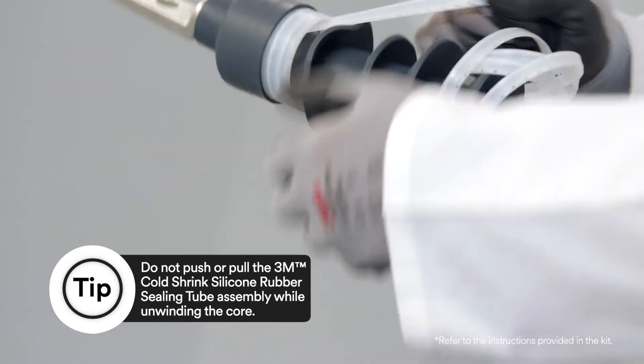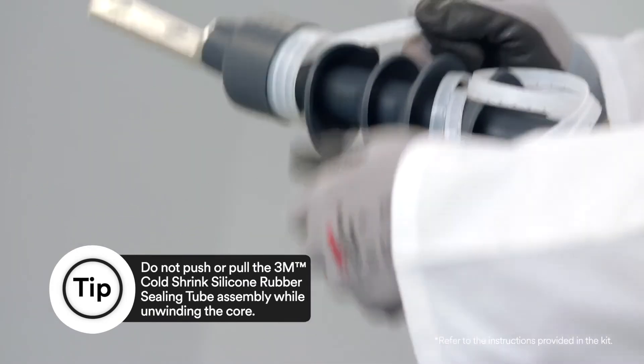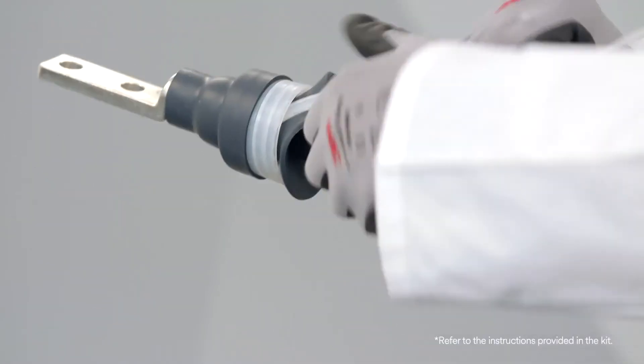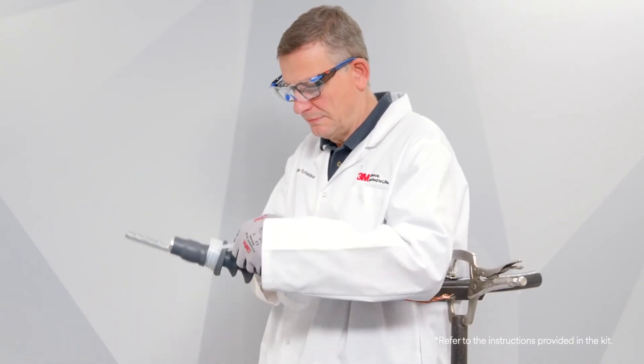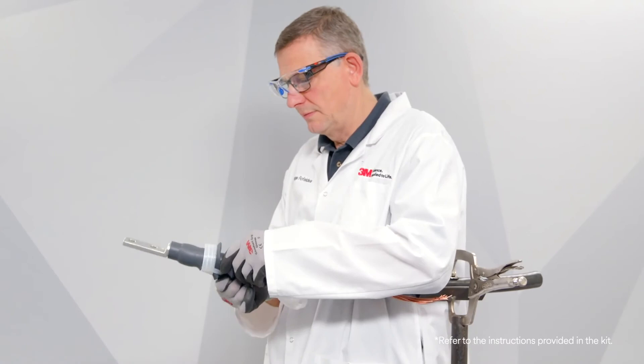Complete the removal of the core by pulling the core ribbon while unwinding counterclockwise. Be sure to alternate pulling and unwinding actions to help prevent the core material from binding up as the core is being removed.